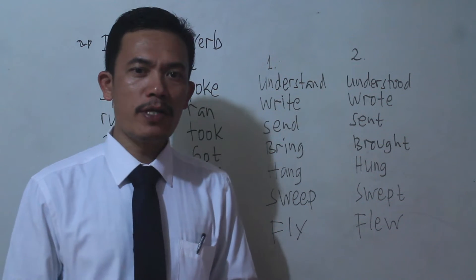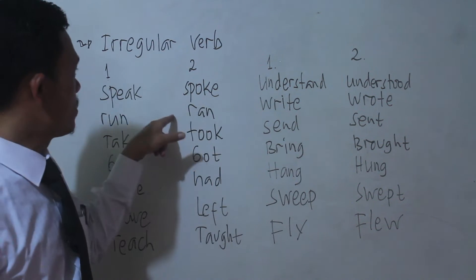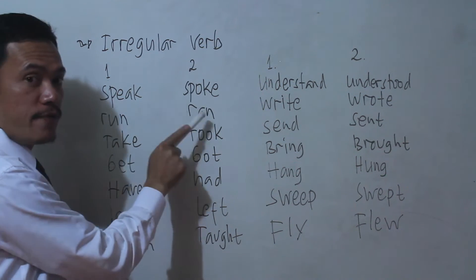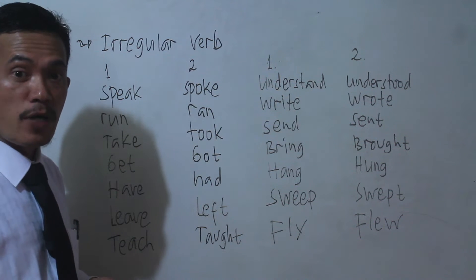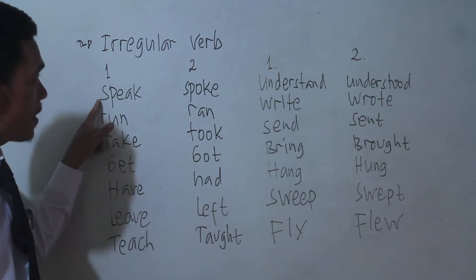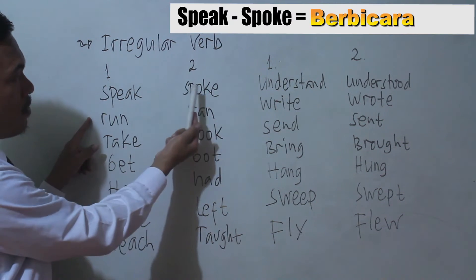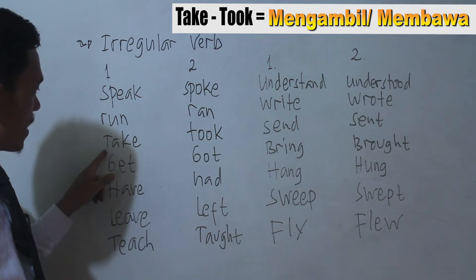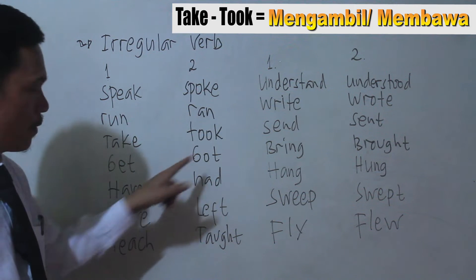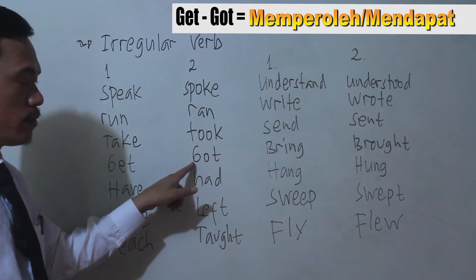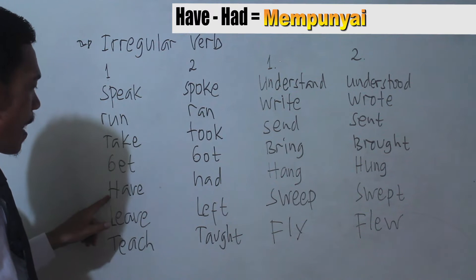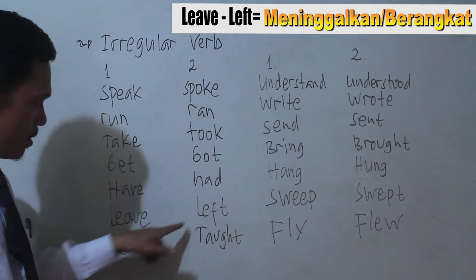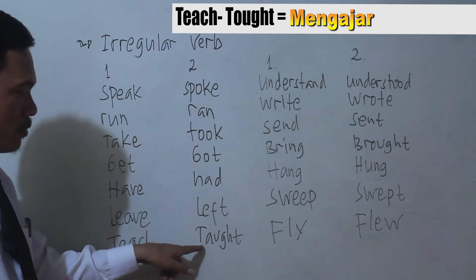In English there is also an irregular verb. Verb 1 and verb 2 are different — different in writing and different in pronunciation. For example: verb 1 'speak', verb 2 'spoke'; 'run' becomes 'ran'; 'take' becomes 'took'; 'get' becomes 'got'; 'have' becomes 'had'; 'leave' becomes 'left'; 'teach' becomes 'taught'.